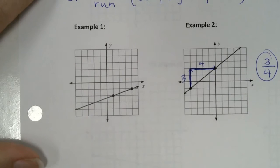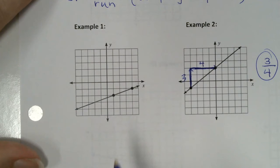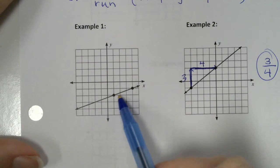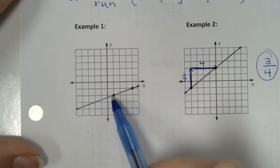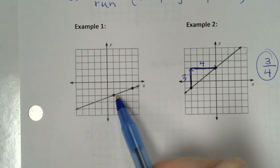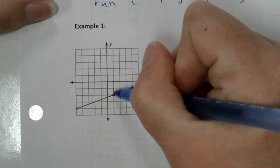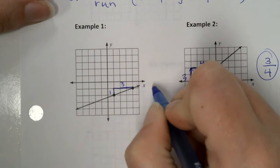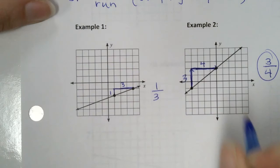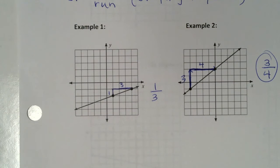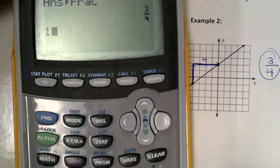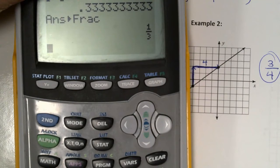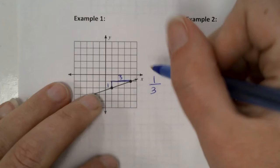All right, let's go back and do example one. First thing is pick two points — they've already given us two points. Second step: start at the leftmost point. Which one of these is more to the left — the lower one or the higher one? The lower one, right — it's more to the left. So now we rise. How far? One. And then we run. How far? Three. So we rise one, we run three. Right now my answer is one-third. One divided by three, hit enter, then math, enter, enter. One-third doesn't reduce, so my answer is one-third.